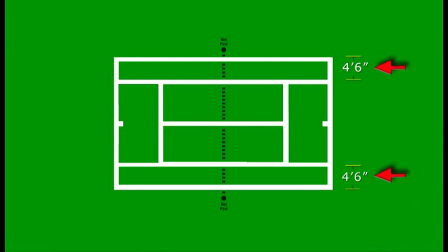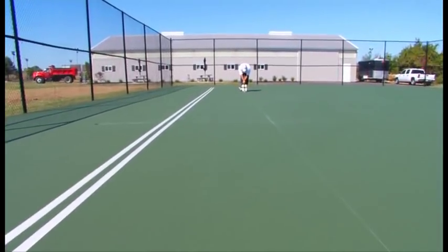Next we'll measure four feet six inches in from the outside playing box line on each side. This will be the outside of the left and right alley lines.